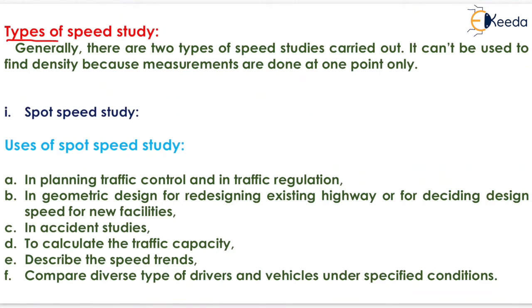The next is type of speed study. Generally there are two types of speed studies carried out. It cannot be used to find the density because measurements are done at one point only.